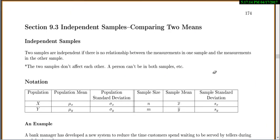Let's skip ahead to page 174, where we're going to talk about independent samples, or comparing two means. Two samples will be independent if there's no relationship between the measurements in one sample and the measurements in the other sample — in other words, the two samples don't affect each other. For this to be true, one person can't be in both samples; they can't have any way of affecting each other.